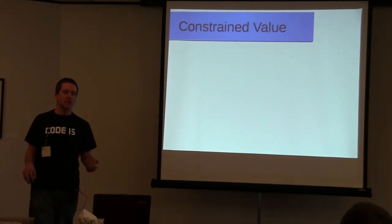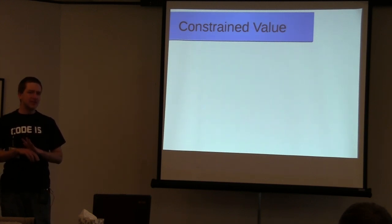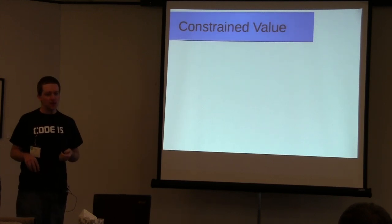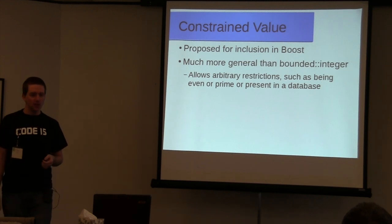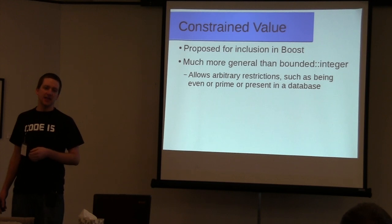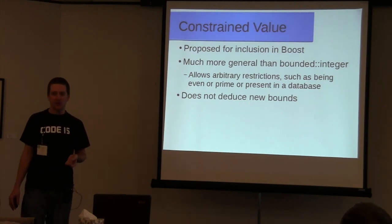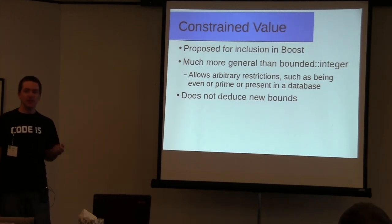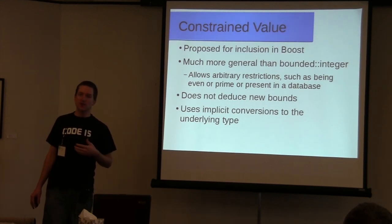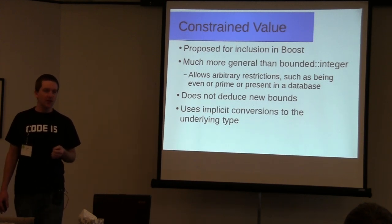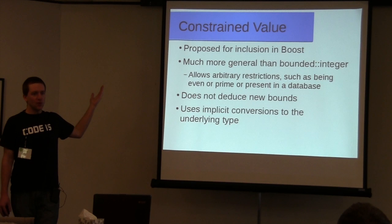Another prior art would be the constrained value library, proposed for inclusion into Boost and provisionally accepted in 2010 with about eight accept votes and no no votes. It's actually much more general than my library — it allows you to apply arbitrary constraints to your integer, such as it's always even, or it's always present in some database. But it lacks some functionality that the Bounded Integer library has. Most significantly, it does not deduce new bounds. Another problem is that it uses implicit conversions to the underlying type — rather than overloading all the arithmetic operators, it just has operator int — which can lead to all the same problems as built-in integers.